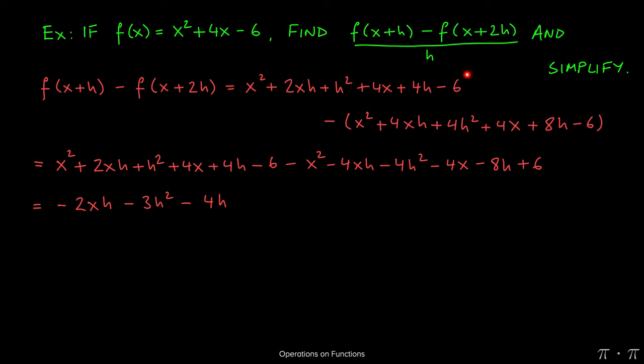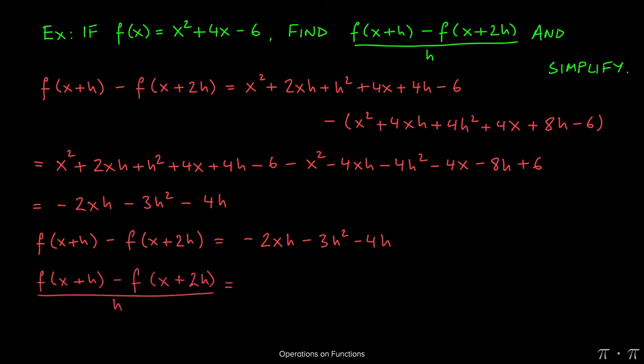The last thing left to do is, since we've found what the numerator is, divide it all by h. So I just wrote down the expression again. Now if I divide the whole thing by h, I have to divide negative 2xh minus 3h squared minus 4h by h. Now I cannot simply cancel one of these h's with this h on the bottom. I don't have a product in the numerator; I have a whole bunch of differences.